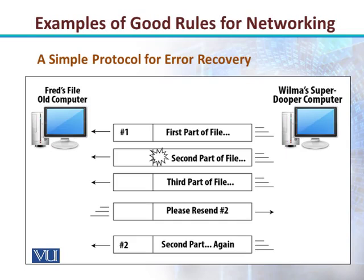Both Wilma and Fred must agree upon a software protocol running on their computers. The sender numbers the packets, and when the receiver — Fred — notices an error, he can send a message back to the sender, Wilma, asking her to resend the specific packet. Wilma then replies by resending the corrupted packet. In this diagram, the second part of the file was corrupted; all packets are labeled with numbers, so packet numbering is essential for error recovery.